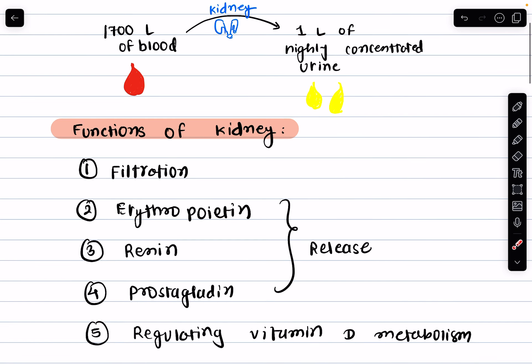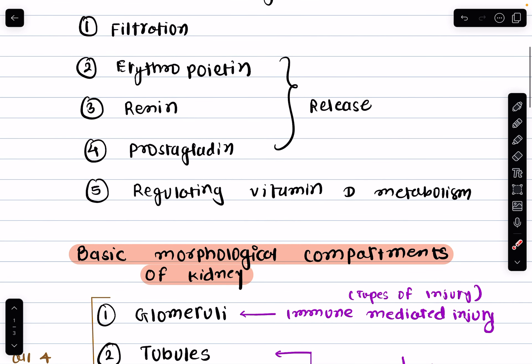Another hormone is prostaglandin, which is essential and plays a very vital role in cardiovascular health. The kidneys also regulate vitamin D metabolism — they help activate vitamin D, which is essential for our bone health.